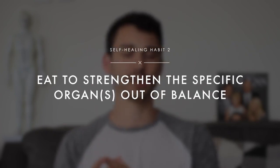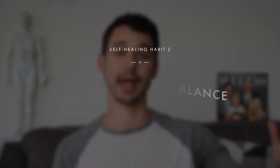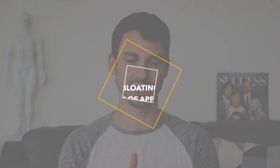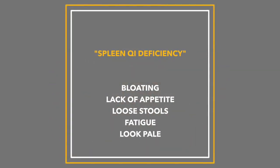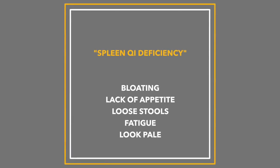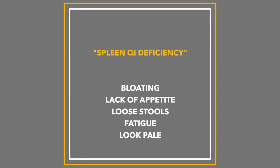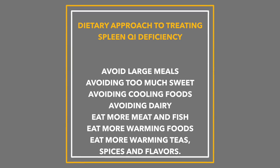The second habit is to eat in certain ways associated with the health of the organ you may have out of balance. This is a Chinese medical diagnosis — not something that would necessarily show up on a biomedical blood test. For example, if you have something called spleen chi deficiency, you show symptoms of bloating, constipation, or loose stools, you look pale, you're low energy, and feel weak and tired sometimes. Key dietary habits include avoiding larger meals, because that puts more stress on the digestive process, and avoiding excessive sweet, sugar, and sweet things, because if you have a weak spleen, your body is already having a hard time digesting those.